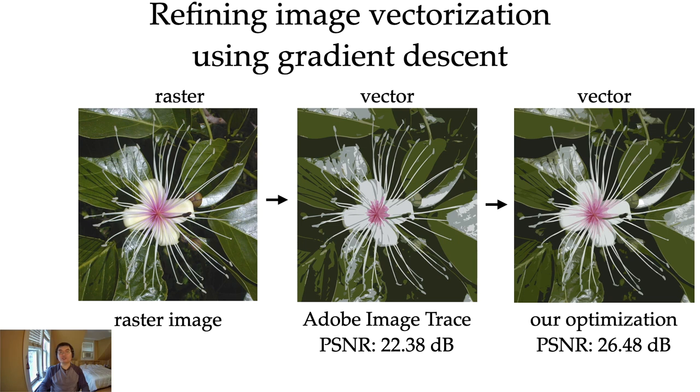Another application we found to be useful is to refine image vectorization results. Given the raster image, we want to convert it to a vector image. There are many tools out there we can use to achieve this. For example, Adobe Illustrator has this feature called Image Trace. What we can do is to take Adobe Image Trace result and further optimize it using gradient descent. We found that we get significantly more accurate vectorization by doing this.